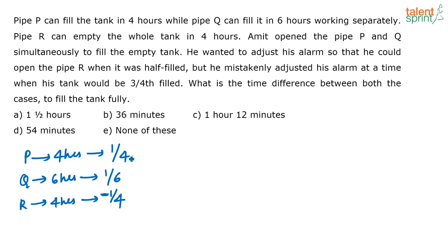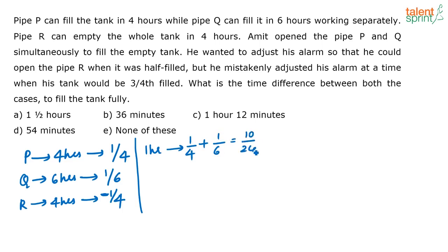Let us first try it using the unitary method. In 1 hour, if P and Q are open, they will fill 1/4 plus 1/6, which is 10/24 of the tank. So P and Q together can fill the tank in 24/10, or 2.4 hours.